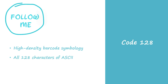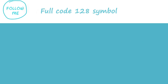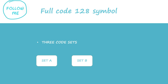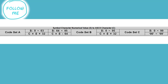Code 128 can encode all 128 characters of ASCII and characters with byte values 128 to 255. Recognizing a Code 128 barcode is easy even though there are three code sets: set A, set B, and set C. Each set contains a subset of the ASCII character set and some auxiliary characters.